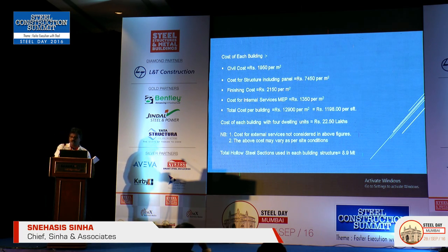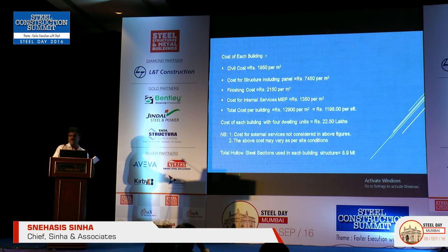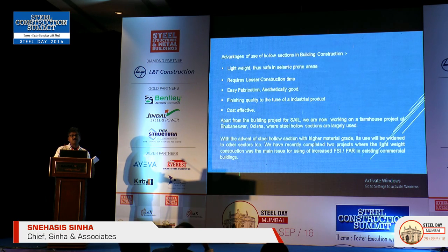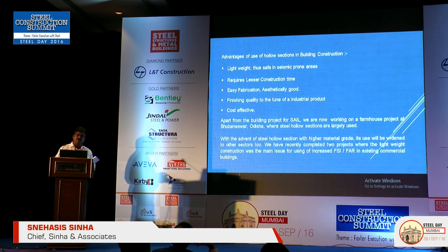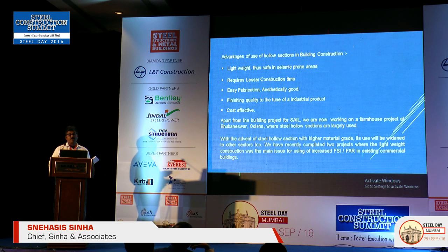This cost is exclusive of external services such as roads and drainage. The entire framing was done with steel hollow sections. Total steel tonnage per building is 8.9 tonnes, and it is a 250-tonne-plus project including all 27 buildings and other infrastructure. Advantages of using hollow sections in building construction: very lightweight, safe in seismic-prone areas, requires less construction time, easy fabrication, aesthetically pleasing, does not require gusset plates in most cases — so very good finishes at junctions. Finishing quality is to the standard of an industrial product, and it is cost-effective.